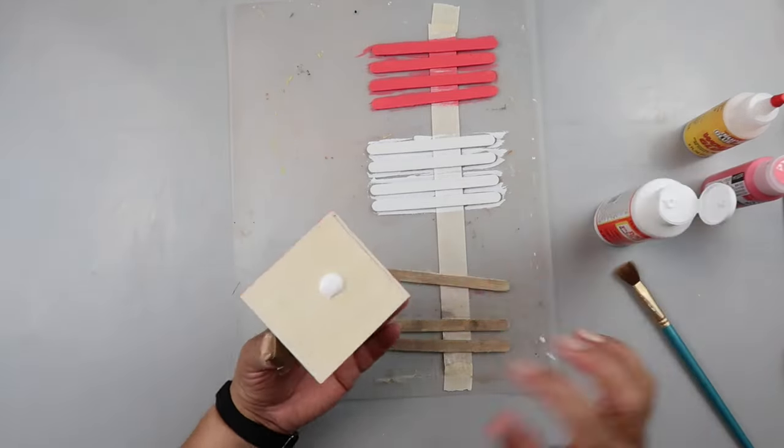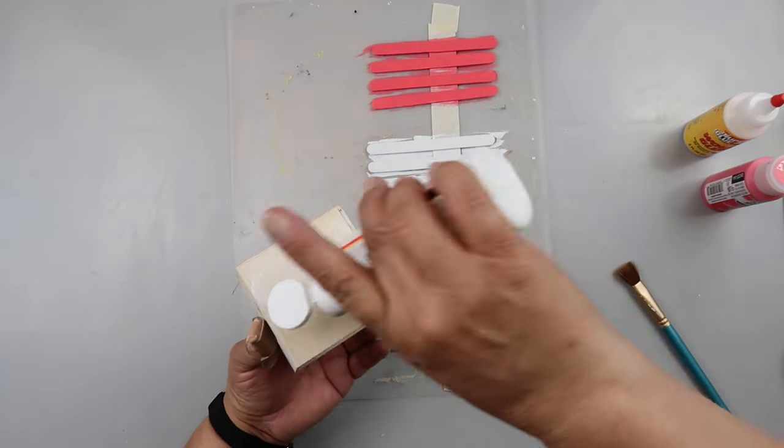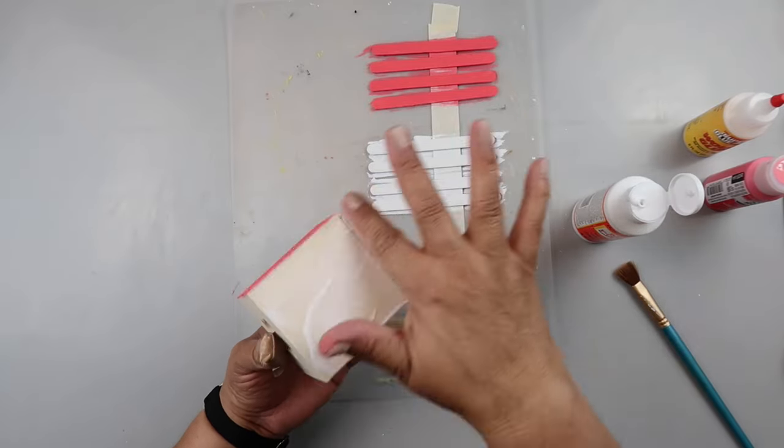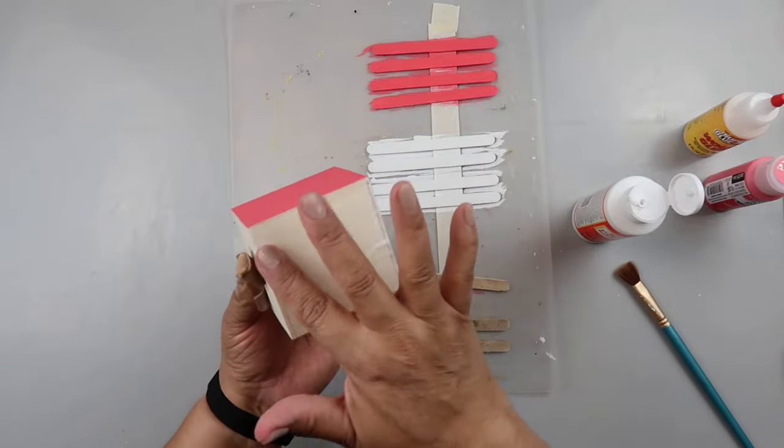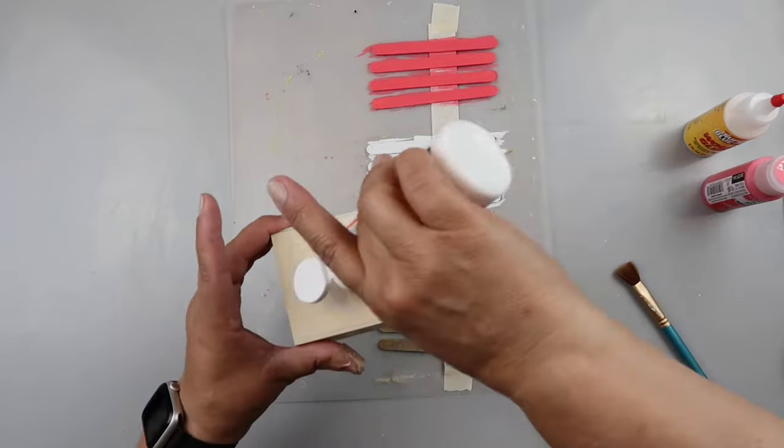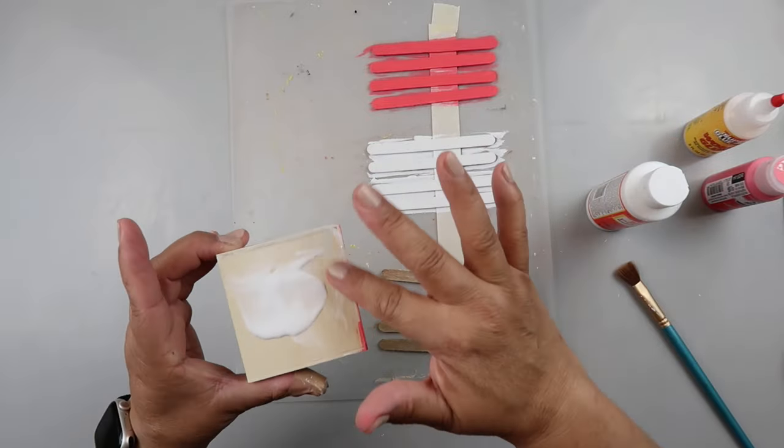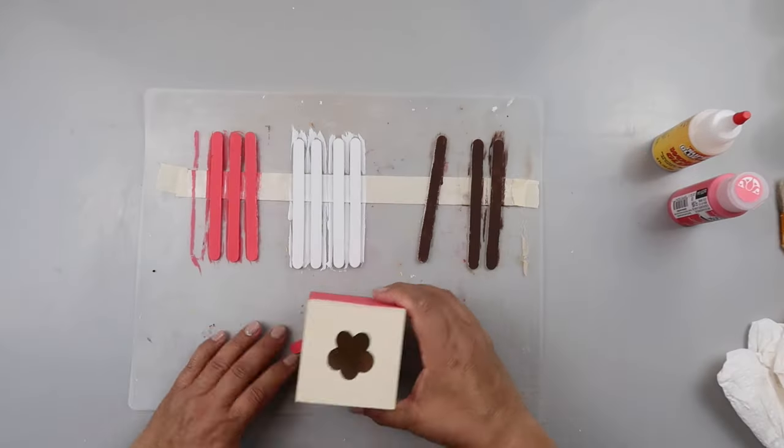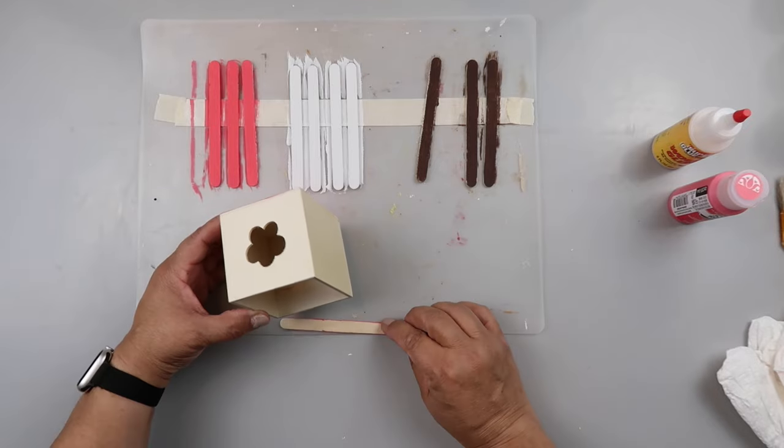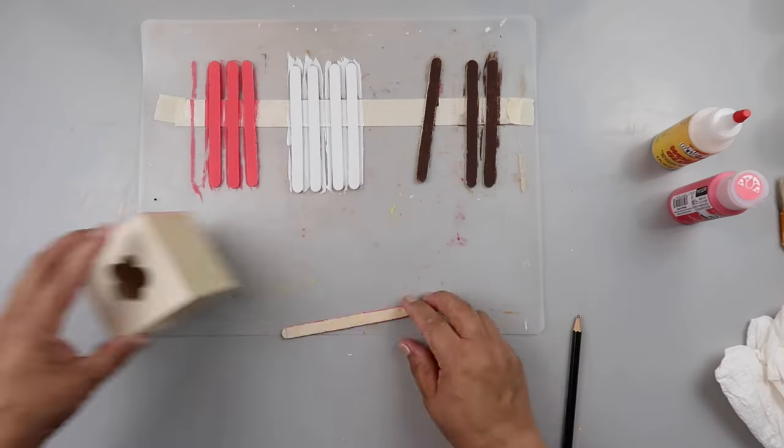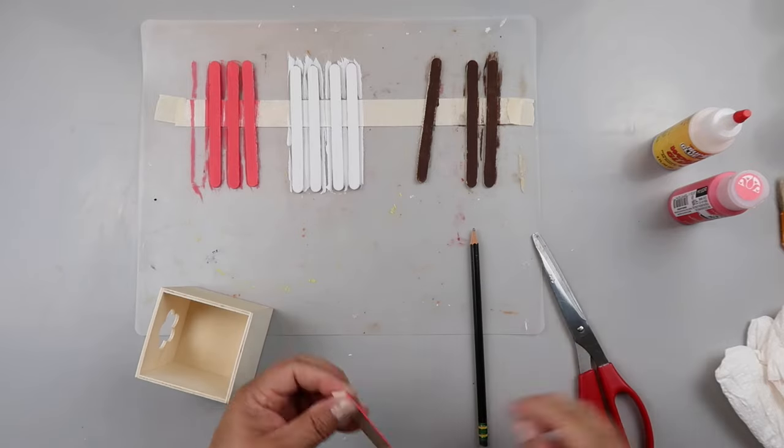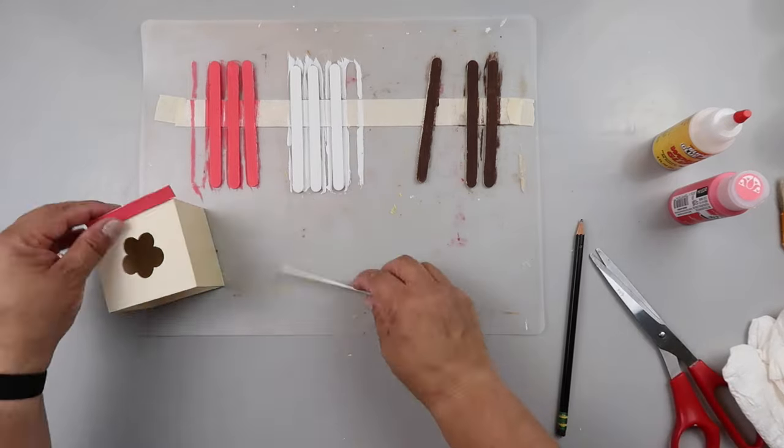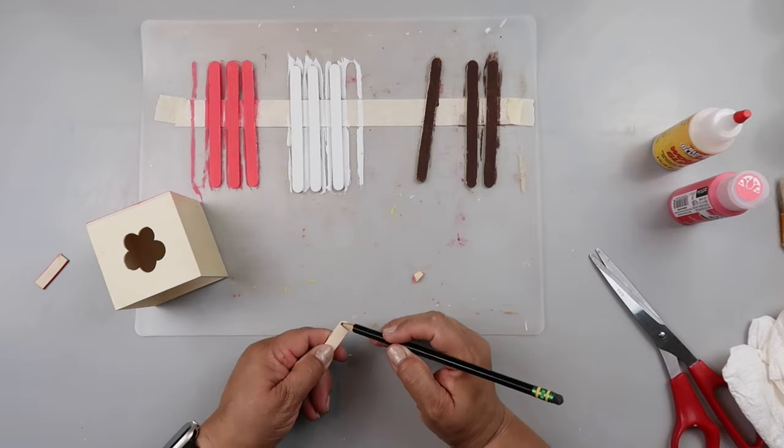I'm taking some Mod Podge. Did you know May is Mod Podge month? It is. It's also my birthday month. So anyway, I'm just applying some Mod Podge to two sides of this little cube with my fingers, and then I'm taking those craft sticks that are now dry and I'm going to cut them down to size. I'm not throwing away the little extras because I'm going to use them for the other side.